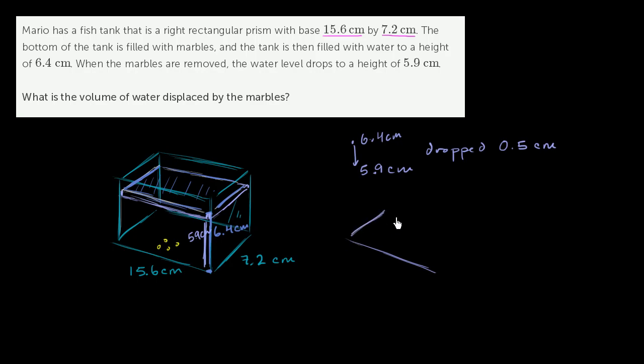So we're essentially trying to find the volume of a rectangular prism that is equal to 15.6 by 7.2 by 0.5. And I haven't drawn it to scale yet, but I want to see all of the measurements. So it's going to be 15.6 centimeters in this direction, 7.2 centimeters in this direction, and it's going to be 0.5 centimeters high.